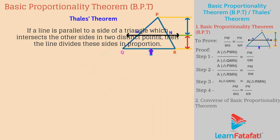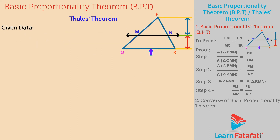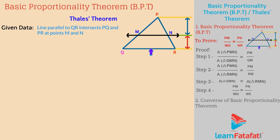Let us prove the Basic Proportionality Theorem. Given data: a line parallel to QR intersects PQ and PR at points M and N respectively. To prove: PM divided by MQ is equal to PN divided by NR. Construction: we need to join segment QN and segment RM.